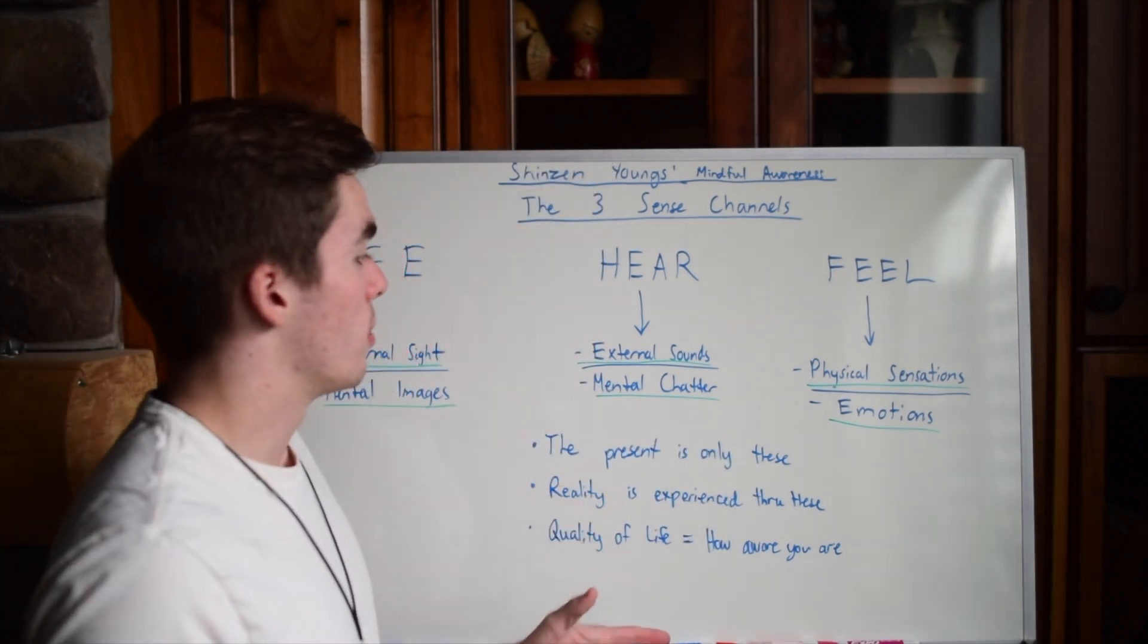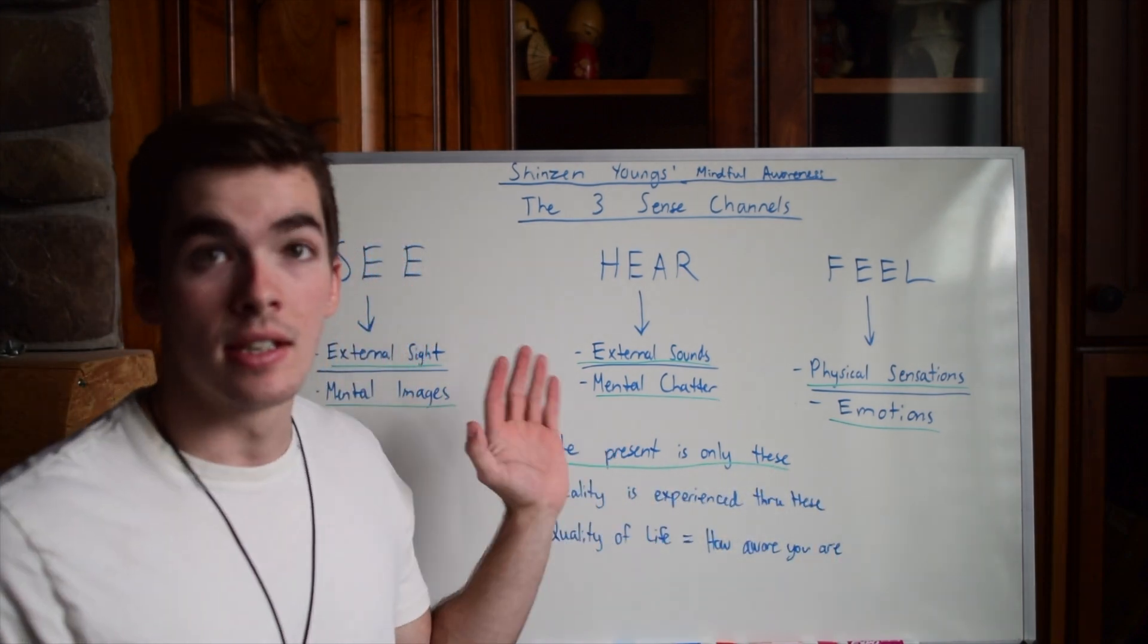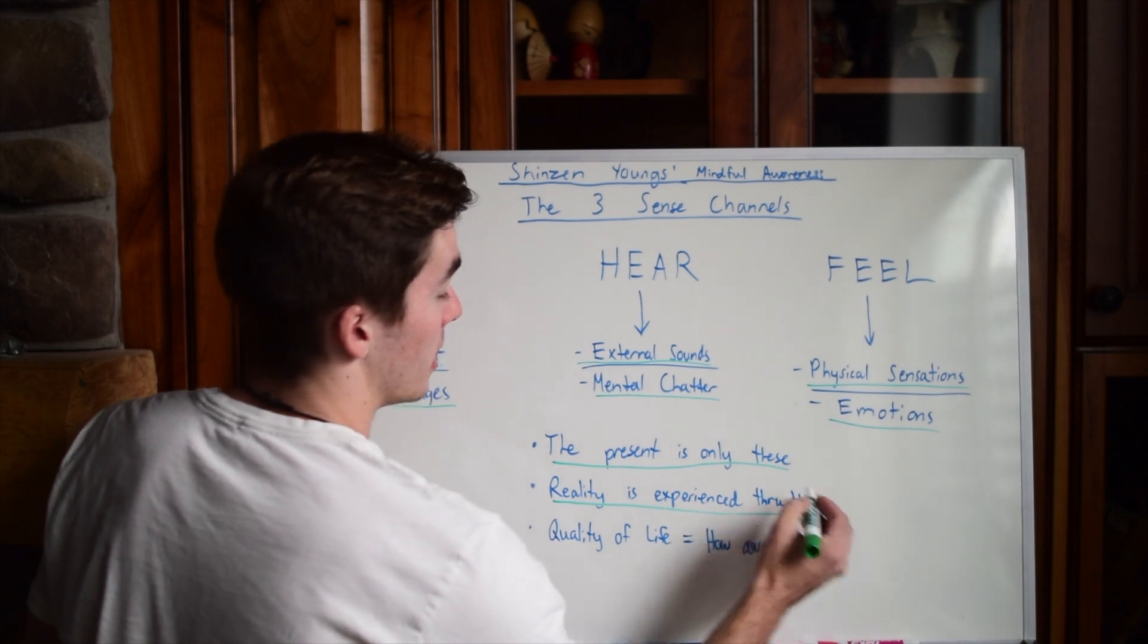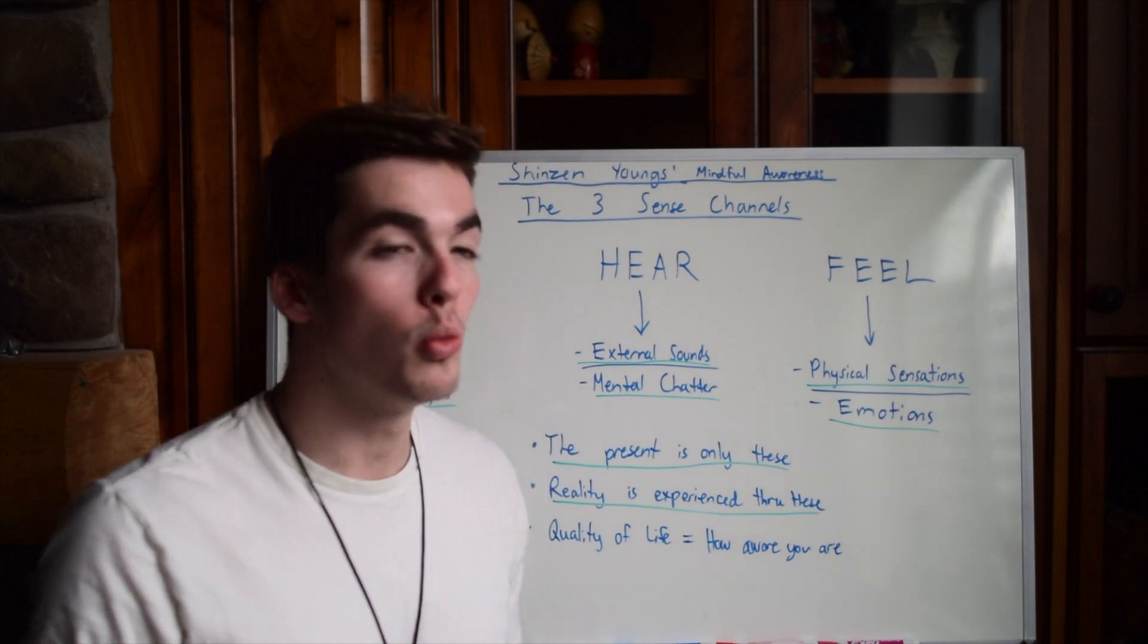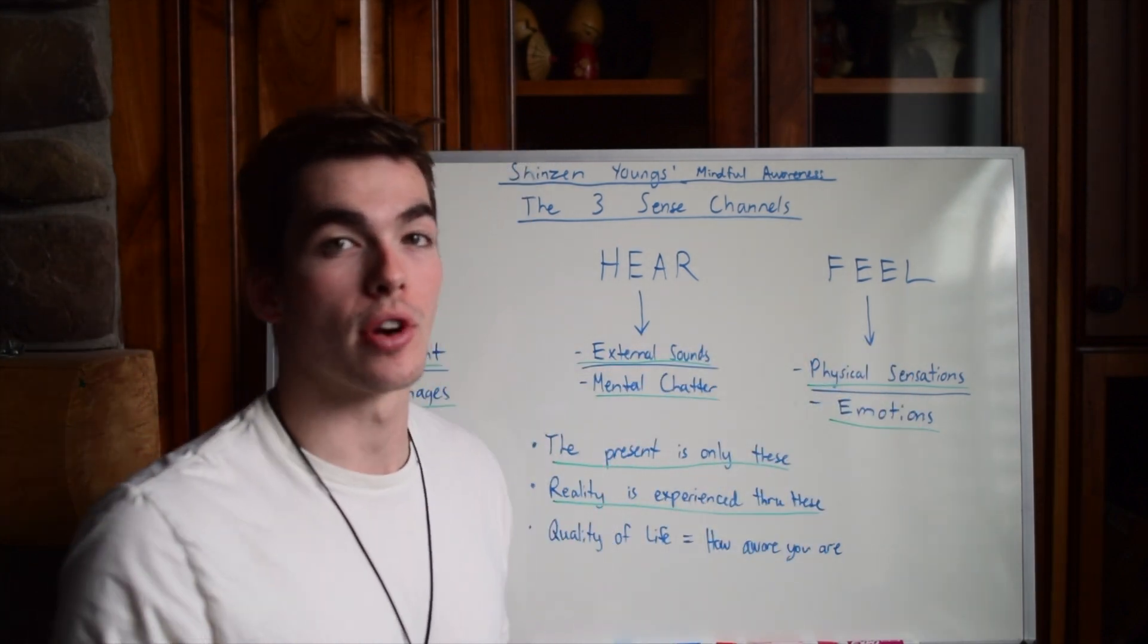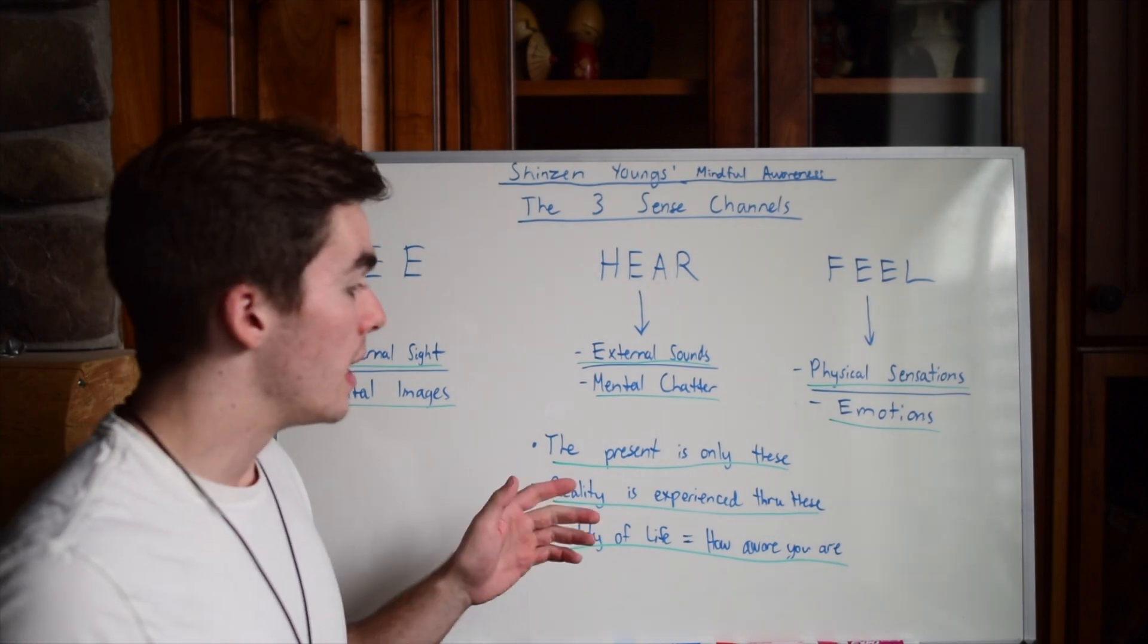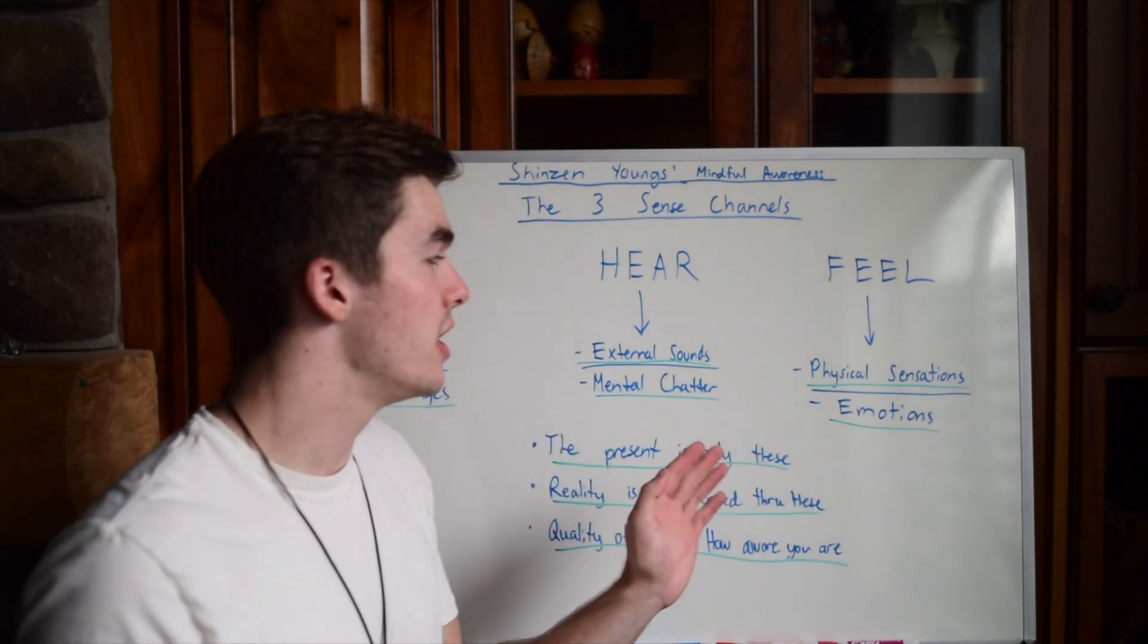So what you'll notice is that the present moment is only ever these six things. That's it. Reality is experienced through these. Nothing that has ever happened to you or ever will happen to you won't come in the form of one of these. And that's just what's so crazy when you realize this, is because the quality of your life is directly correlated to how aware you are of each of these.